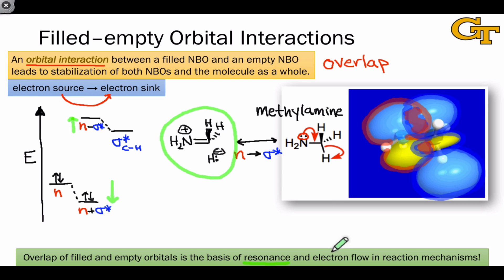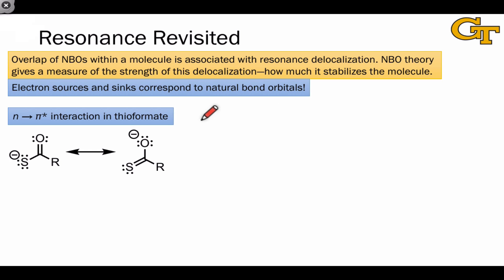We can also apply the same type of analysis to predict reaction mechanisms, looking for a strong source in the electron donating molecule and a strong sink in the electron accepting molecule, and thinking about an orbital interaction between the two to facilitate the transfer of electrons from one molecule to the other. Now that we've been given a taste for the idea that interactions or overlap between NBOs is the essence of resonance, let's look at a couple of more examples.